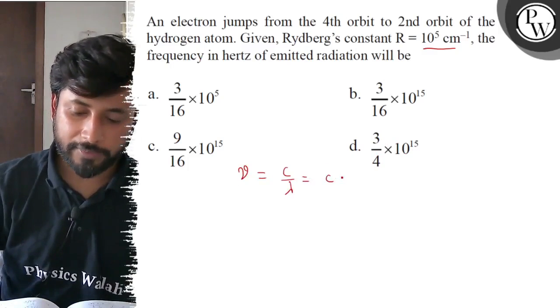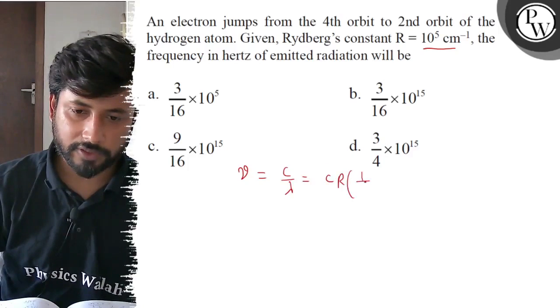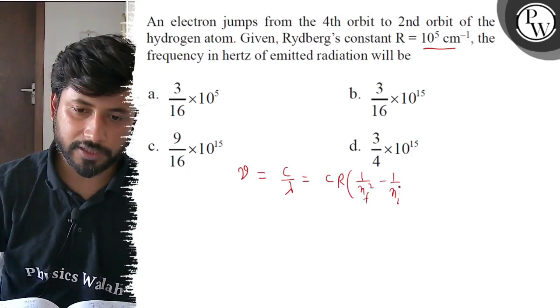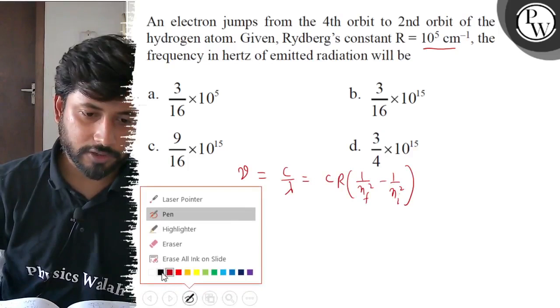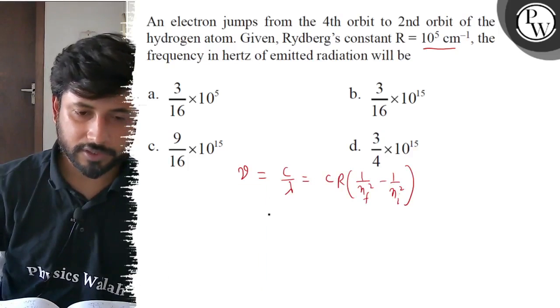And for 1 by lambda, use the formula: 1 by lambda = R into (1 by n_final squared minus 1 by n_initial squared). Now put the values into this, and you will get the value of frequency.